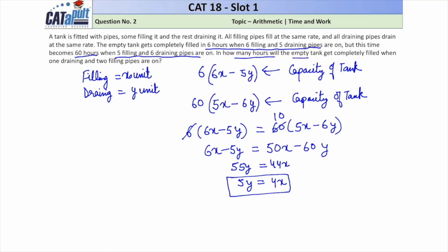The question asks: in how many hours will the empty tank be completely filled when one draining and two filling pipes are on? One draining pipe does −Y work and two filling pipes do 2X work. If this system takes n hours, then n(2X − Y) must equal the tank's capacity. Let's equate it to the first condition: n(2X − Y) = 6(6X − 5Y).